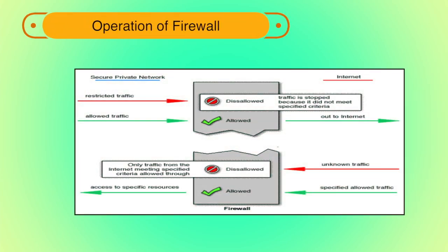Regarding the operation of firewalls, there are two access denial methodologies. A firewall may allow all traffic through unless it meets certain criteria, or it may deny all traffic unless it meets certain criteria. The type of criteria used to determine whether traffic should be allowed through varies from one type of firewall to another. Firewalls may be concerned with the type of traffic, source or destination addresses and ports, or may use complex rule bases that analyze application data to determine if traffic should be allowed through.